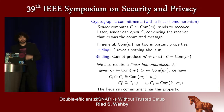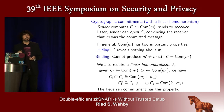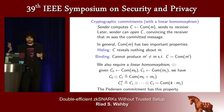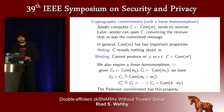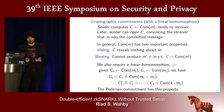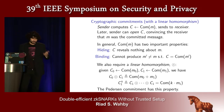These commitment schemes have two properties. First, they hide — the commitment doesn't reveal anything to the receiver about the message. Second, they bind — the sender can't lie about what it put into the commitment. Hyrax uses a special kind of commitment with a third property: a linear homomorphism. This means there's an operator that takes two commitments and produces a new commitment to the sum of the messages inside. This also allows scaling of commitments — to multiply by k, we just add k copies together. In particular, Hyrax builds on Pedersen commitments, which have this property.